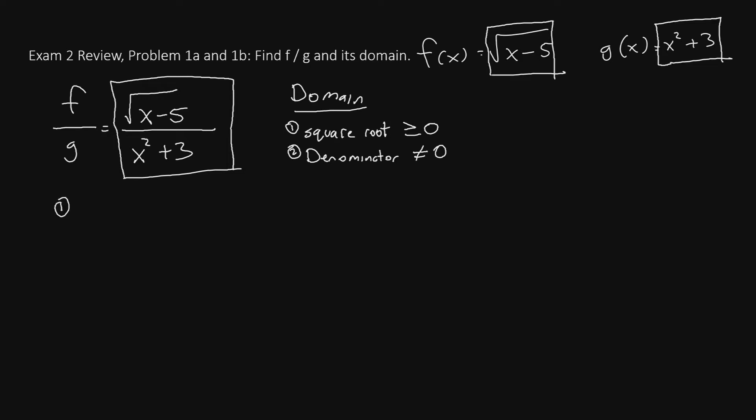So for part 1, we'll say x minus 5 is greater than or equal to 0. If we add 5 to both sides, we'll end up with x is greater than or equal to 5.